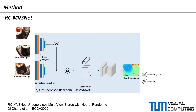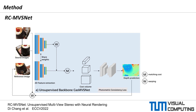Given multi-view images and corresponding camera input, the backbone network of RCMVSnet generates an initial depth map of a reference image from the cost volume, which computes the matching cost of homography warping among all images. The structure of the backbone network follows the existing supervised method CASMVSnet, and photometric consistency loss provides pixel-wise supervision for predicted depth. From the homography warping, an implicit neural volume is constructed along with the cost volume by computing the matching cost among source images only.